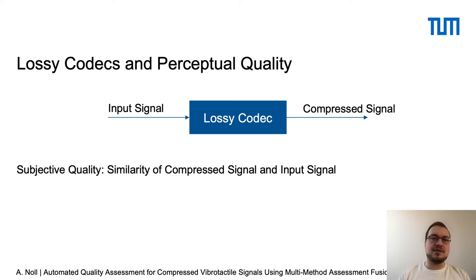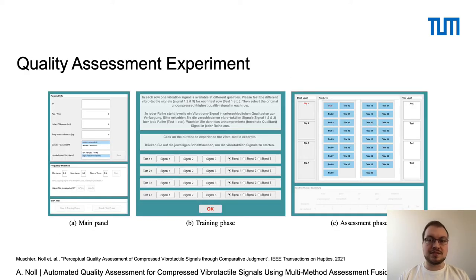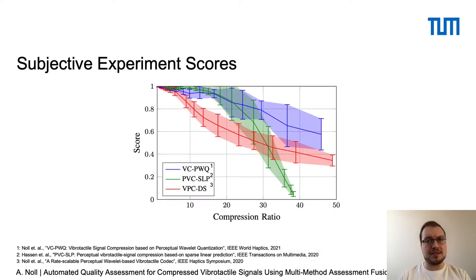In this scenario, we look at lossy codecs. We have an input signal going into a lossy codec and a compressed signal coming out of it. The subjective quality is defined as a similarity between the compressed signal and the input signal. We have developed a piece of software in prior work that we use here to measure data for all three state-of-the-art codecs, and we get results in terms of score over compression ratio for all three codecs, allowing us to assess performance between them.